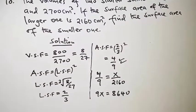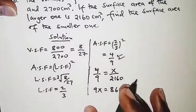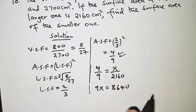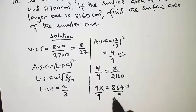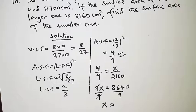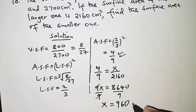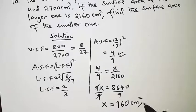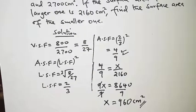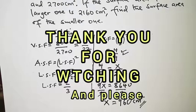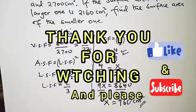From here we can get the value of x, which is the surface area of the smaller solid. Dividing both sides by 9, x equals 960 square centimeters. That is the surface area of the smaller solid. Thanks for your patience, thank you for watching, see you next time.